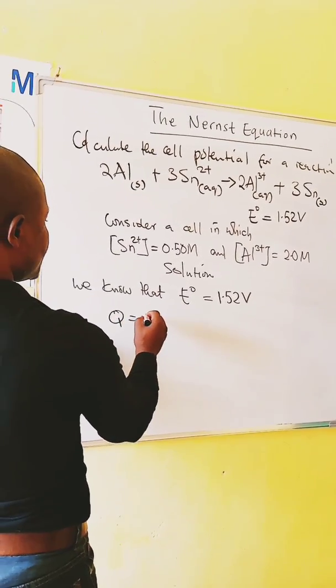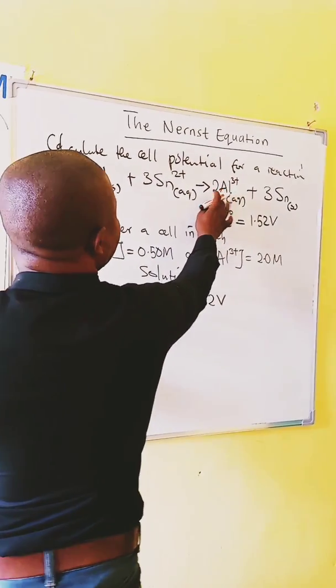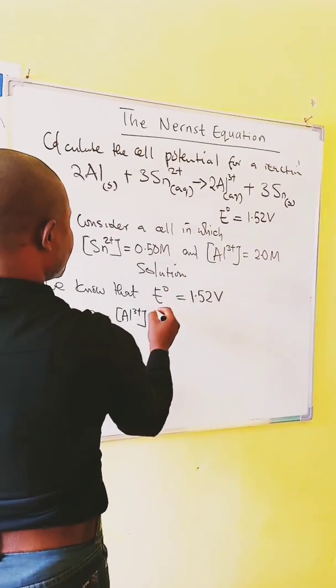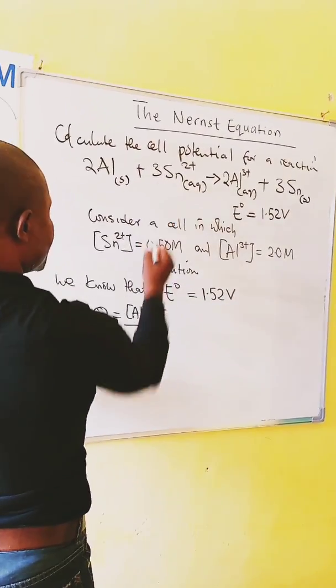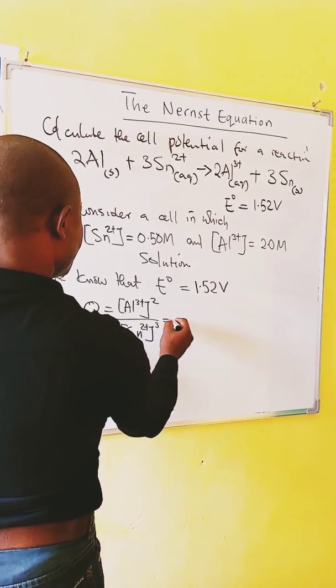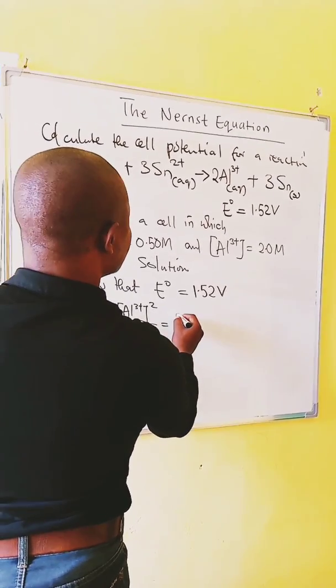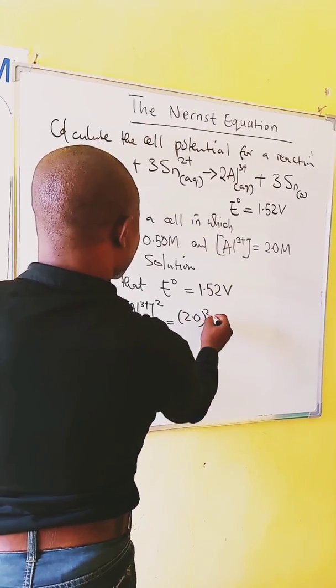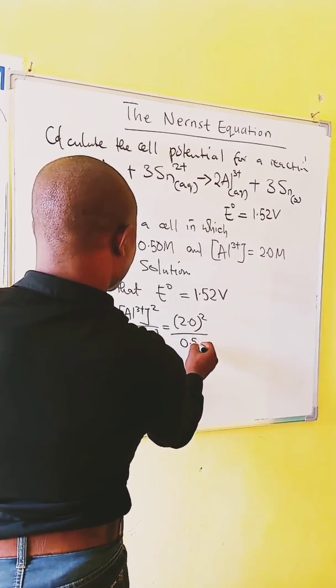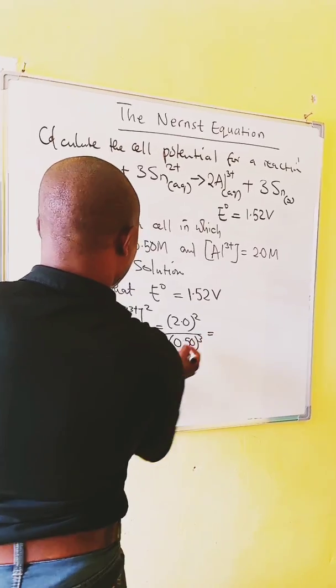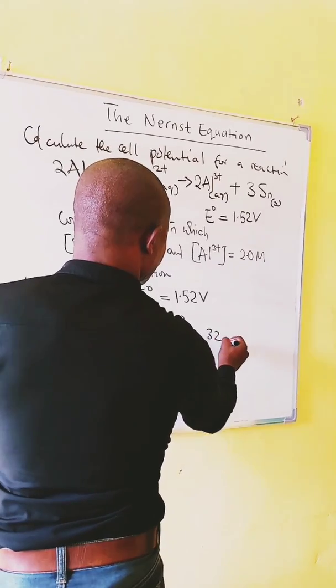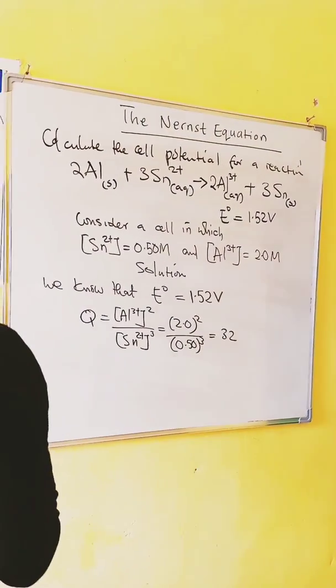Q is equal to, in this case, the product is aluminum, concentration of aluminum raised to the power 2 over concentration of tin 2+ raised to the power 3, which is equal to 2.0 squared over 0.50 cubed. When you do the computation you get 32.